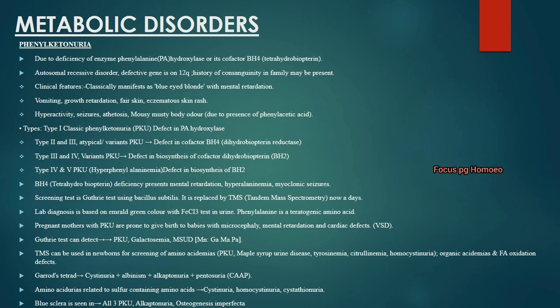The Guthrie test can detect phenylketonuria, galactosemia and MSUD (maple syrup urine disease). Tandem mass spectrometry (TMS) is used in newborn screening for amino acidemias including PKU, maple syrup urine disease, tyrosinemia, citrullinemia, homocystinuria, organic acidemia and fatty acid oxidation defects.